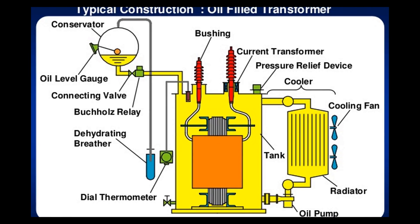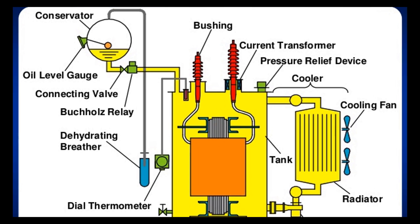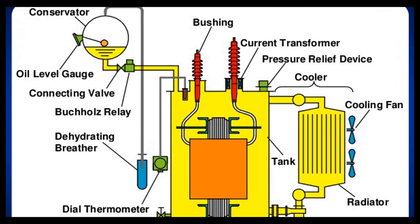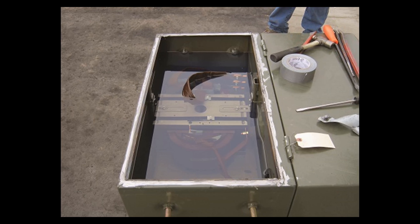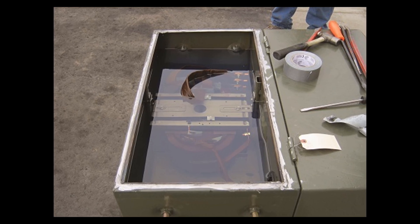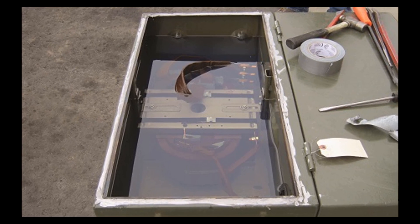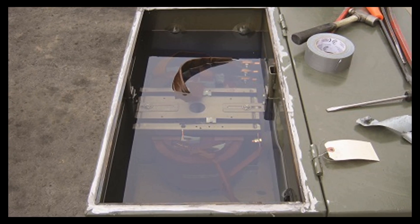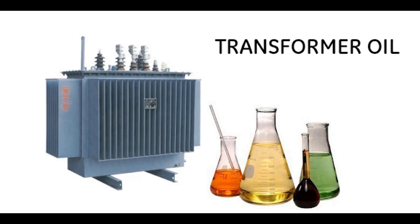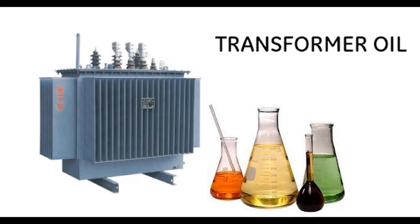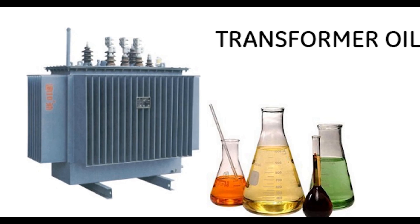The oxidation reaction can be further accelerated due to temperature and the presence of catalysts like iron, copper, and dissolved metallic compounds in the transformer oil. How do we measure the acidity of insulating oil?